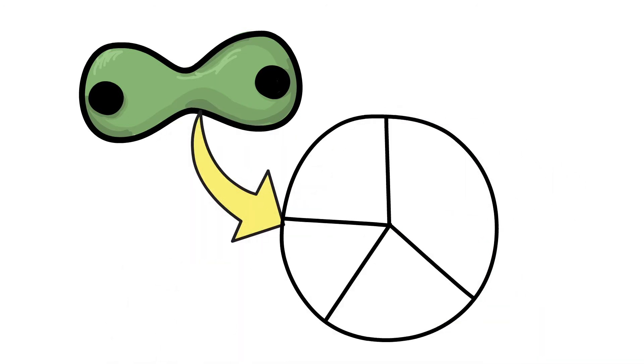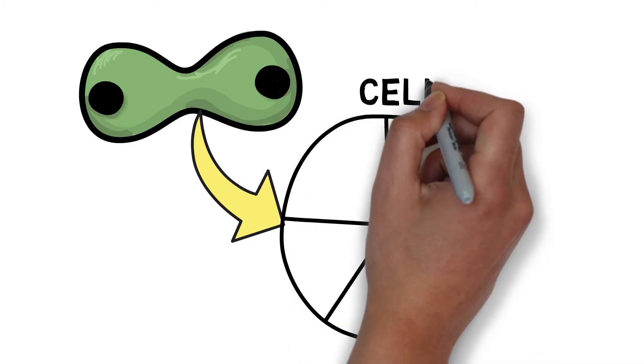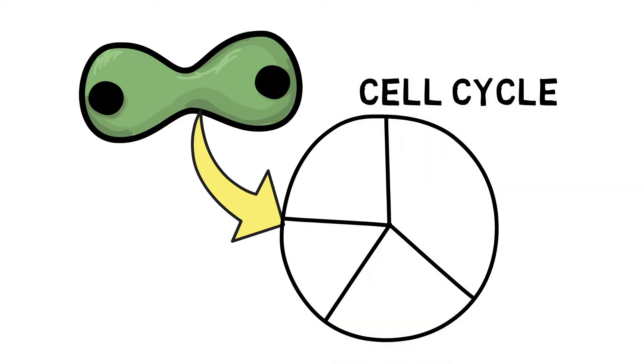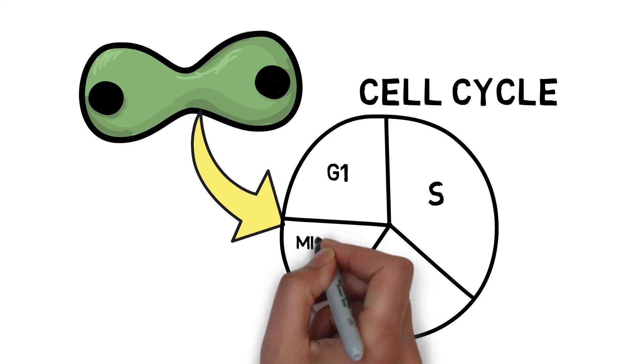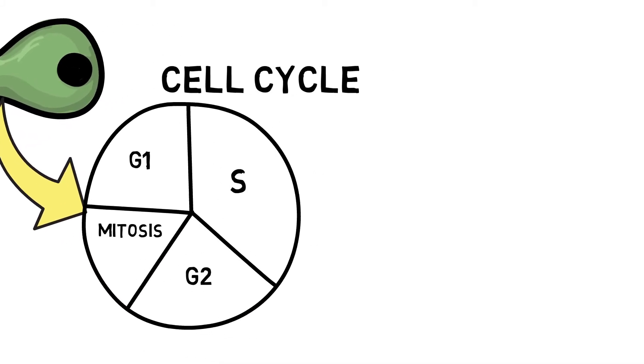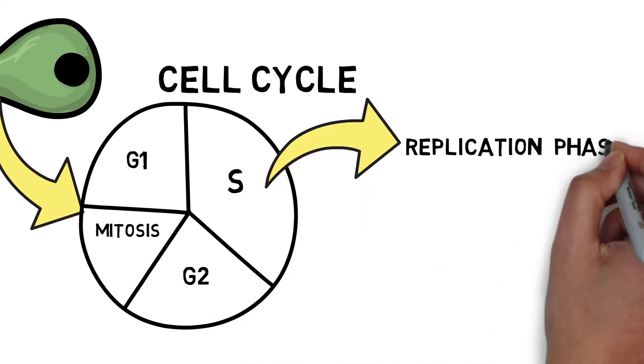The cell, in order to divide into two daughter cells, undergoes this process called a cell division or cell cycle. It is a four-stage process consisting of S phase, G1 phase, G2 phase, and a mitosis phase. The S phase is also called as a replication phase.